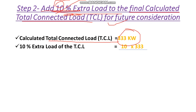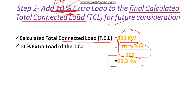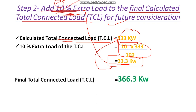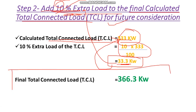That gives us 33.3 kW as the 10% extra load. Adding this to the total connected load gives us a final total connected load of 366.3 kW.